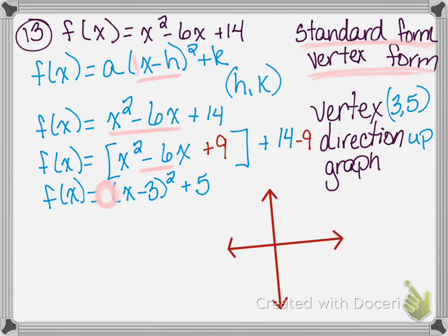We're going to go positive 3 and up 5, so our parabola is going to have a vertex of (3, 5) and it's going to open up. Because of this graph, we can also determine that our solutions to this quadratic would be complex because this parabola does not cross the x-axis. We're not asked to find the solution — we're asked to find the vertex, the direction, and the graph.